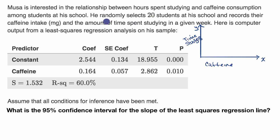And Musa here, he randomly selects 20 students. And so for each of those students, he sees how much caffeine they consumed and how much time they spent studying and plots them here. And so there'll be 20 data points.